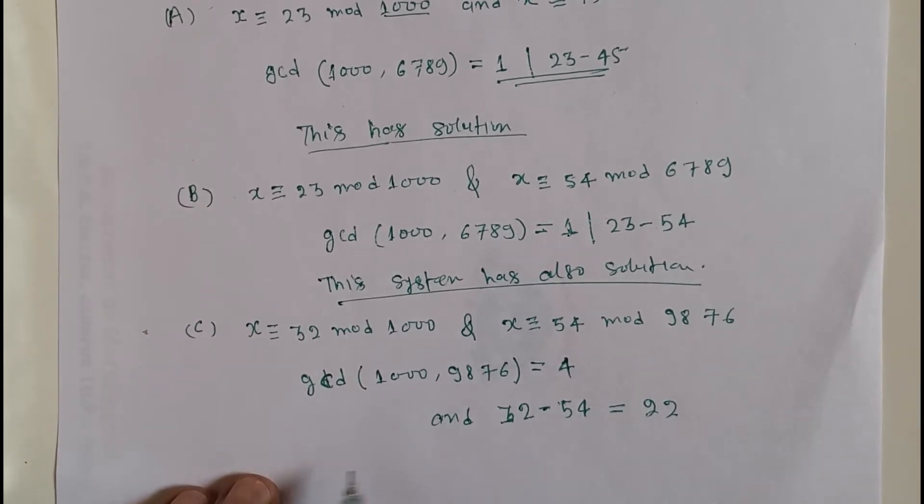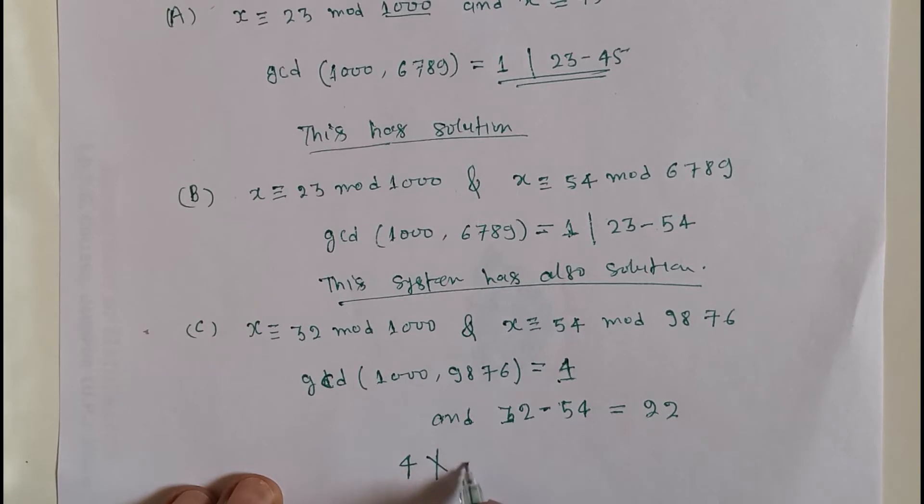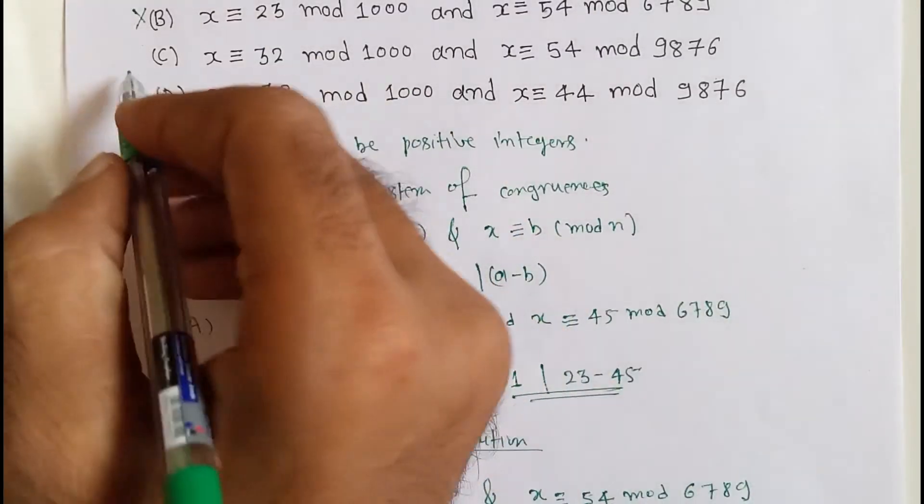So here 4 does not divide 22. So option C is correct.